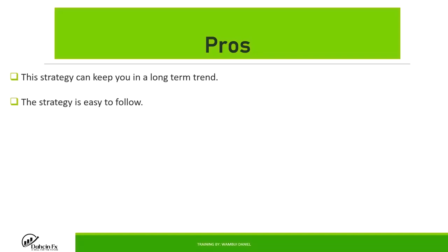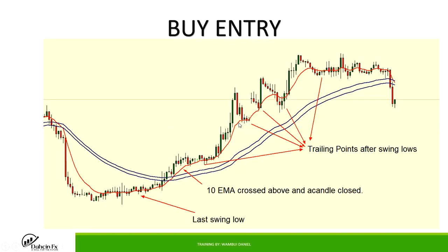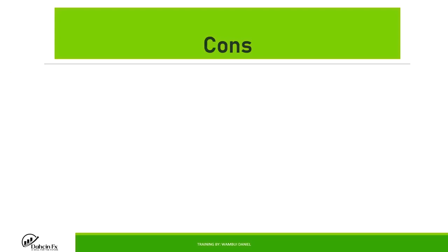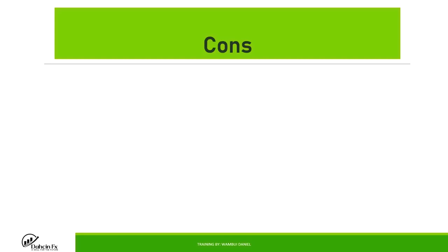The strategy is very easy to follow because you're just looking at crossovers and a candle close. It assists you to trade with the trend because the EMAs are showing you the direction: if candles are above the EMA it's a buy trend, if they're below it's a sell trend. It's also very good for trending markets.